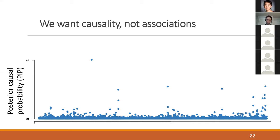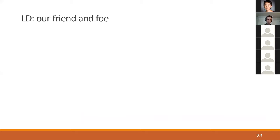Identifying these causal SNPs is very important — it's actually the real goal of GWAS, because it gives us a clue into the biological mechanism. Then we can start thinking about treatments or drugs; pharma companies are really interested in estimating these causal probabilities. That's what we're going to speak about in this part of the talk. LD is going to play a major role.